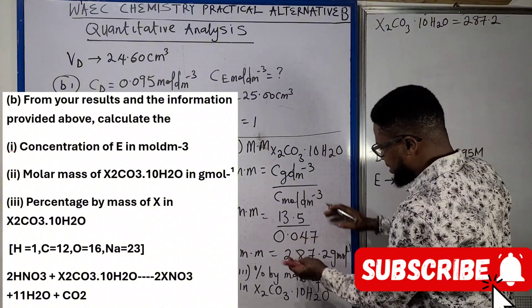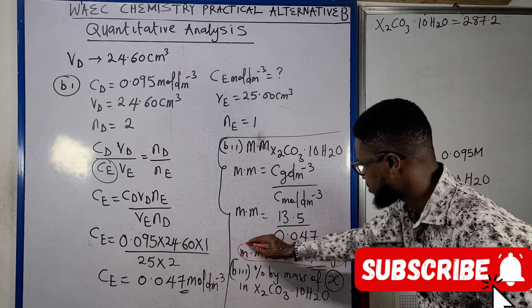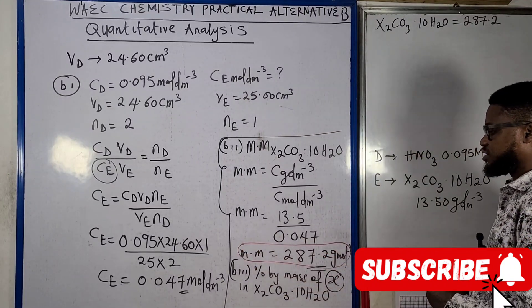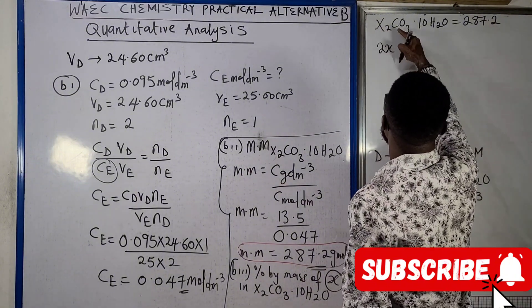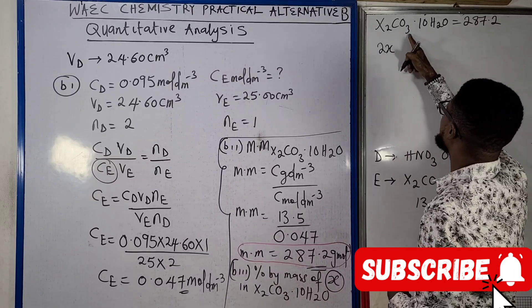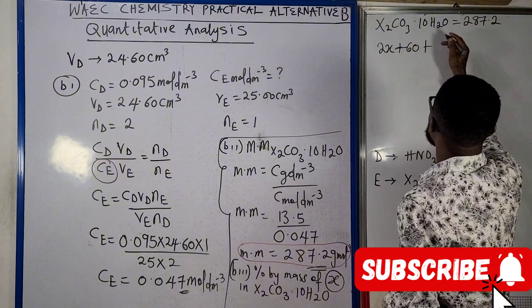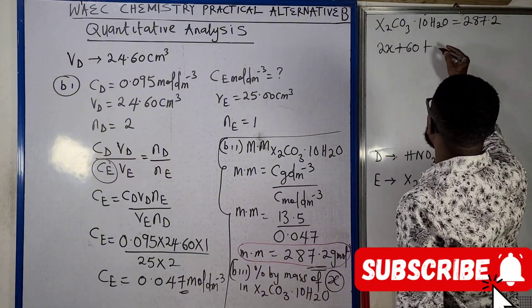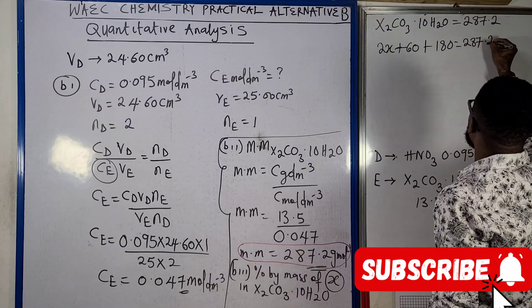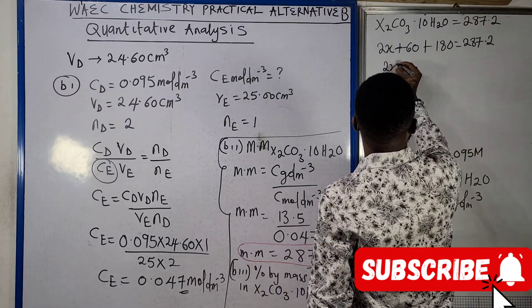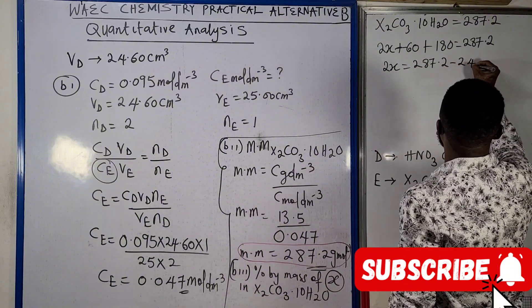Because that is the molar mass that we have calculated here. So what that means is X times 2, so this will give us 2X, carbon is 12, oxygen is 16 times 3 is 48, plus 12 is 60, plus water is 18 times 10, that is 180, equals to 287.2.